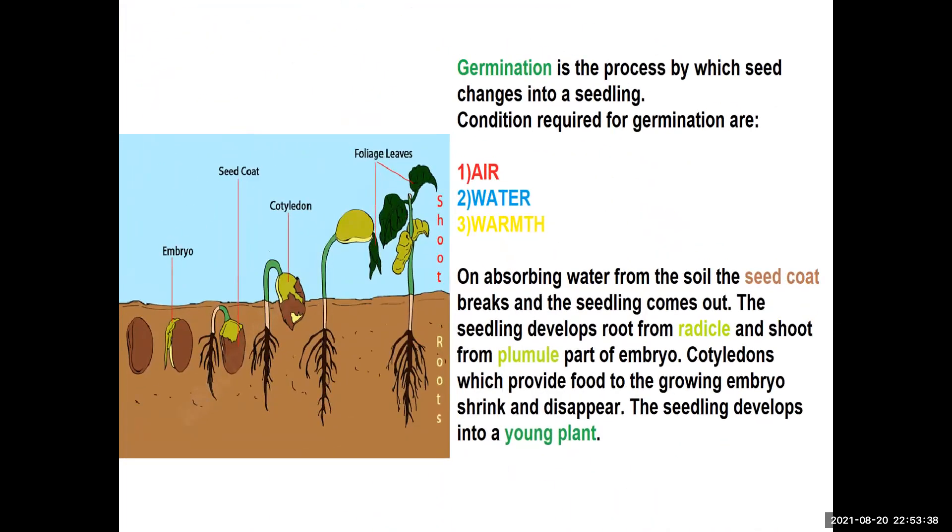Now, let us see how germination takes place in seed. The process by which seed changes into a seedling is called germination. The conditions which are required for germination are air, water, and warmth.